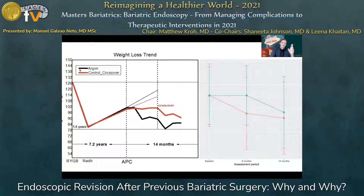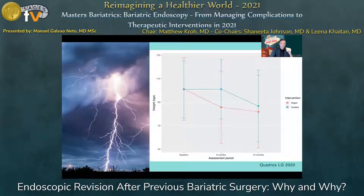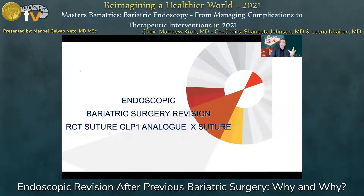The graphic from the Quadros study is very classic — you see the weight loss after initial surgery, the idea of patients around 1.5 years post-op. Those patients had around 7.5 years of follow-up. The dotted trend line shows weight regain in the control group. There was a crossover: the APC group crossed over to clinical follow-up and the sham group crossed over to APC. The graph on the right confirms superiority of the treated group against the sham.